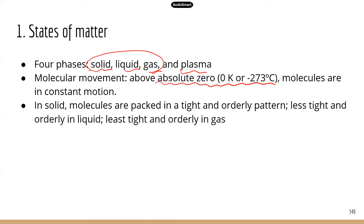One thing you need to know about molecules is that as long as the temperature is above absolute zero — which is 0 K, or negative 273 degrees Celsius — molecules are in constant motion. This provides the basis for why diffusion takes place, because molecules are constantly on the move and collisions between molecules create diffusion. Molecules move from high concentration areas to lower concentration areas.